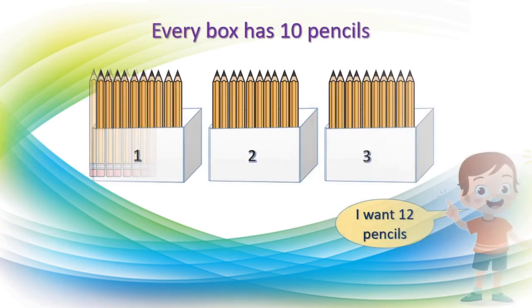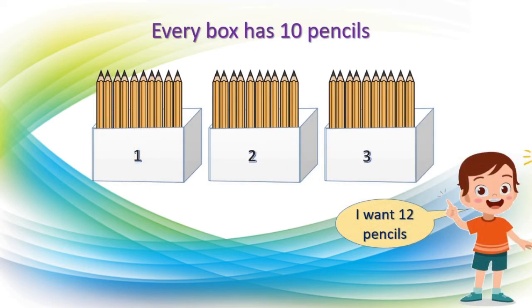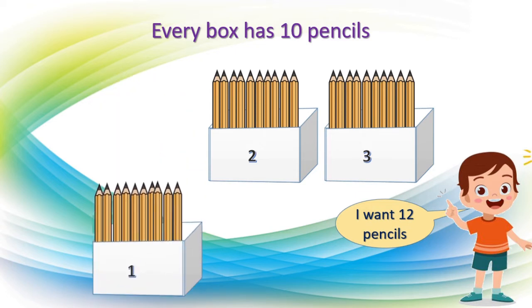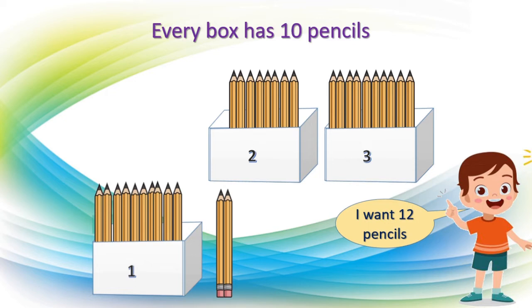Let's go through that again. This boy needs 12 pencils, so one box we are giving — that is 10 pencils. And from the second box we are going to give him only 2 pencils. Altogether he got 12 pencils: 10 in one box plus 2. What we did here is untie the second bundle.